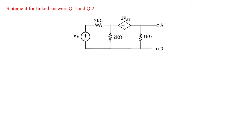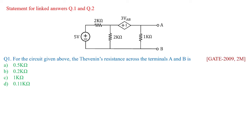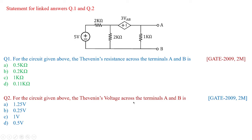In this program, a statement for linked answers question number 1 and 2 are given. For the circuit shown above, the Thevenin's resistance across A and B — the options given are A, B, C, D: 0.5 kilo, 0.2 kilo, 1 kilo, and 0.11 kilo ohms respectively. The second question asks us to find the terminal voltage across A and B, which would be 1.25, 0.25, 1 volt, or 0.5 volts. This type of question is from gate 2009, worth 2 marks.